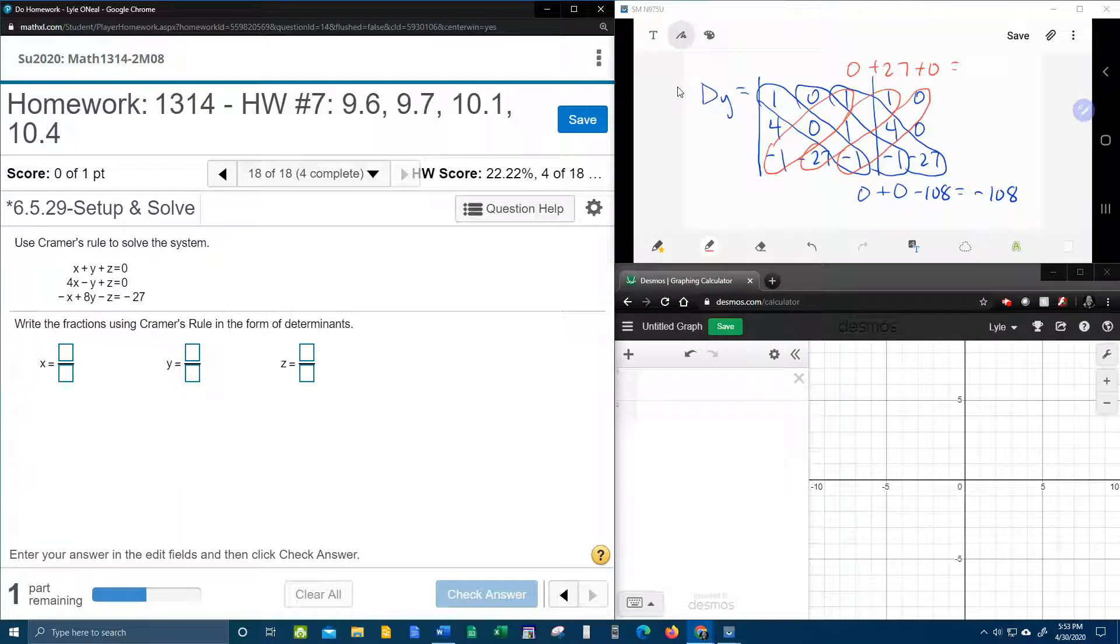Change direction, change the sign. 0, plus 27, and 0. And again, remember, I'm multiplying there. Multiply, multiply, multiply, multiply, add them up. And then the numbers hanging off the end, the 27 and negative 108, add them up. Negative 81, d sub y.